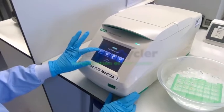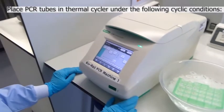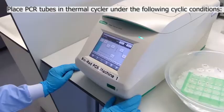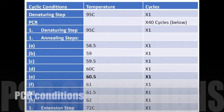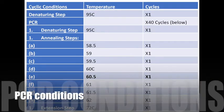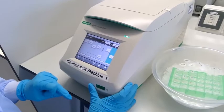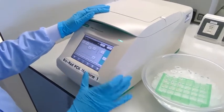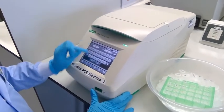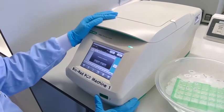The next step, once you've set up your PCR reaction, is to add all your samples to the thermocycler. This table shows you exactly what conditions we need. Note that rows A to H refer to different temperatures tested to optimise the best primer annealing temperature for amplification.